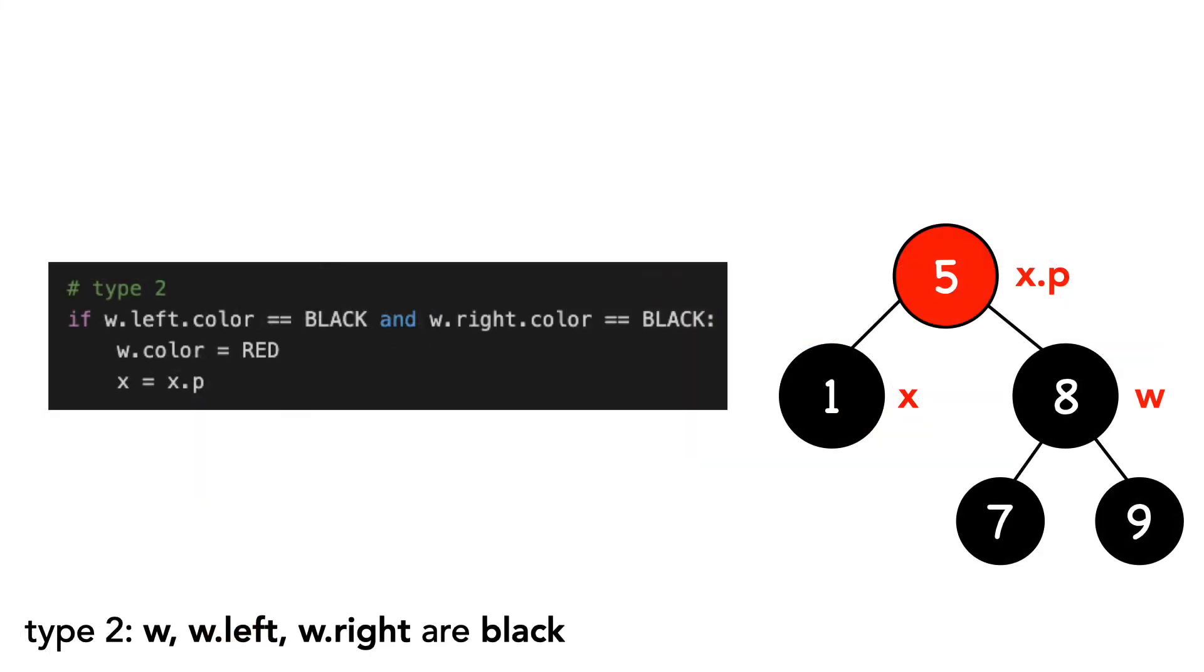On to type 2, where w, w.left, and w.right are all black. We set w to red and change x to its parent. Again, I want to say that this is not a valid red-black tree. We're looking at this specific fix in a vacuum.